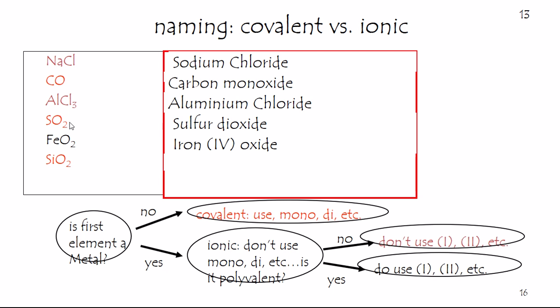Let's do one more. Silicon — technically to the right of the staircase. Don't worry about metalloids; we're going to consider this to be a nonmetal. We will use prefixes. That makes it all that much easier — don't worry about Roman numerals. Simply say silicon dioxide.